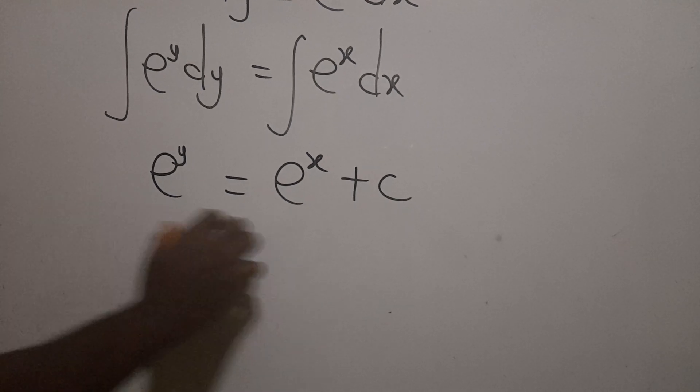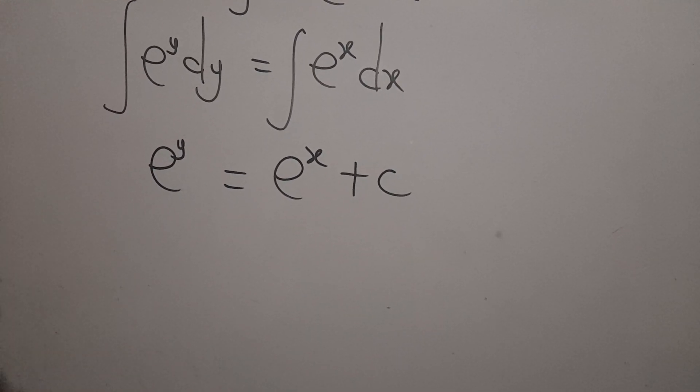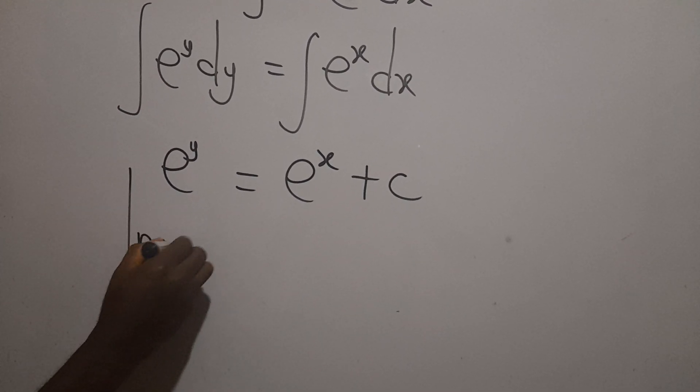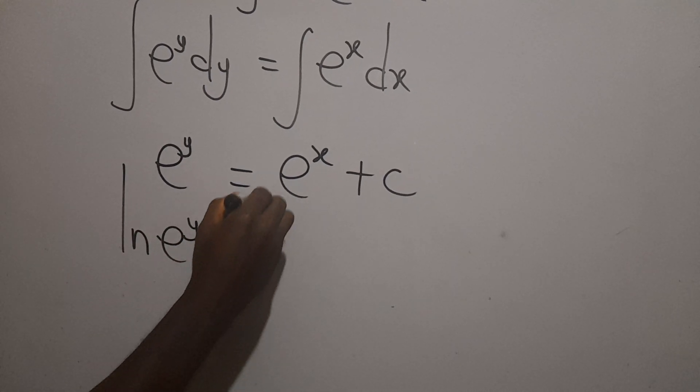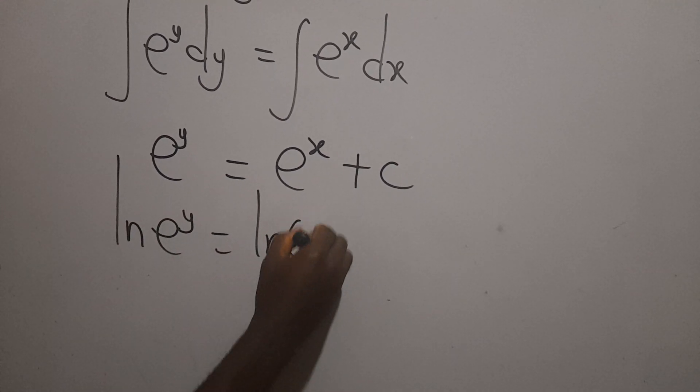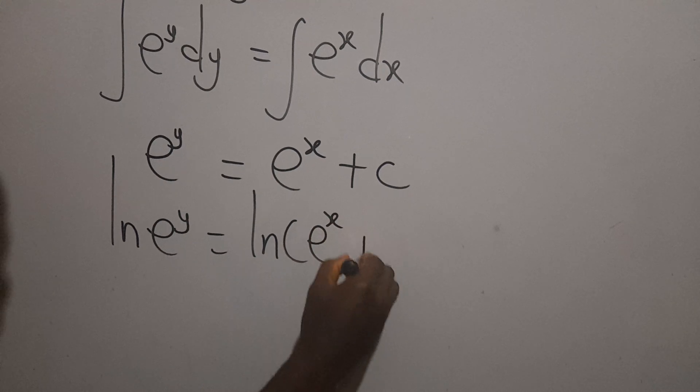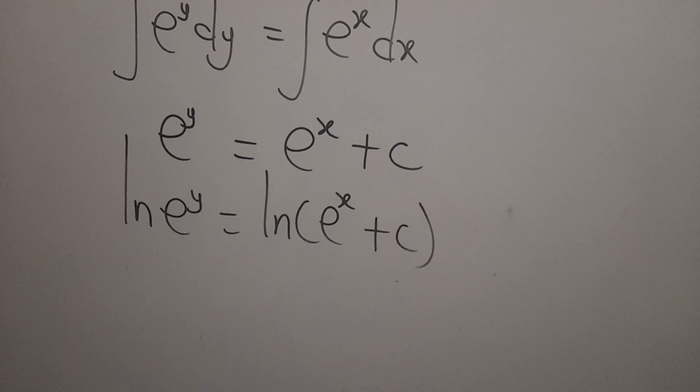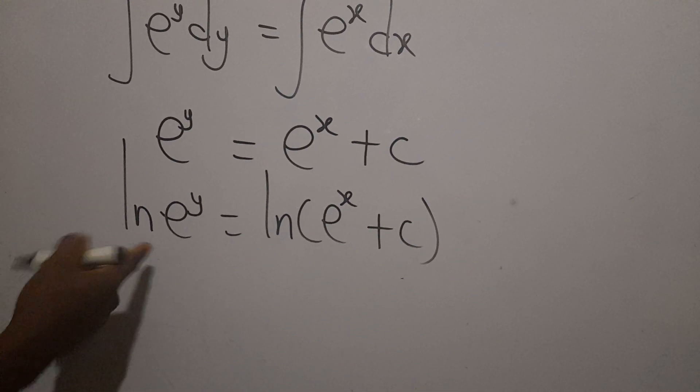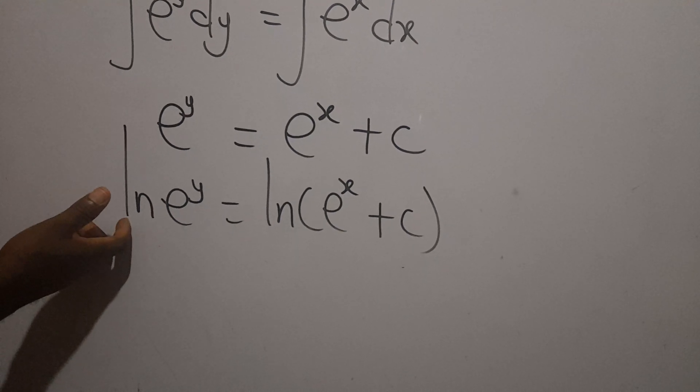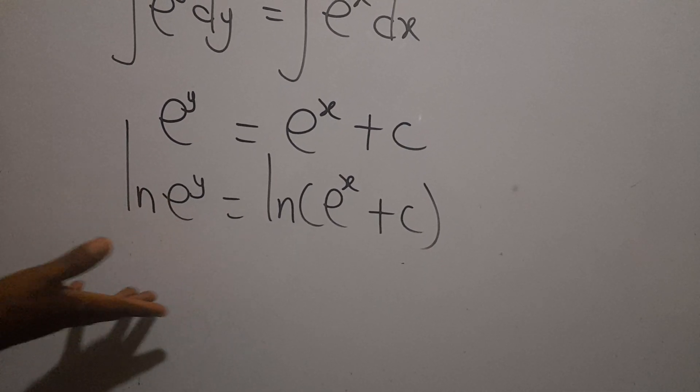Now what do we do? We can find ln on both sides. Then we can say ln e exponent y equal to ln e exponent x plus our c. So from here remember when the ln meet the exponential function.